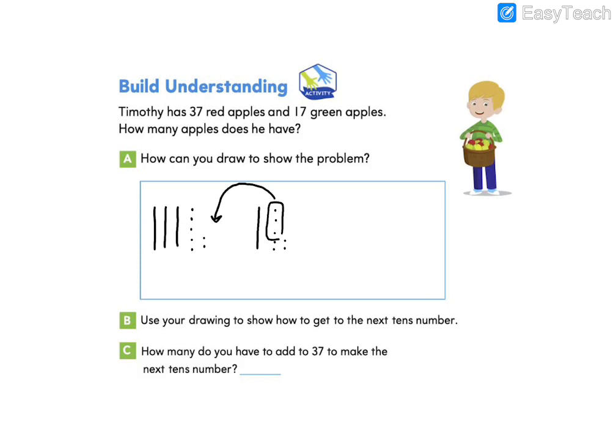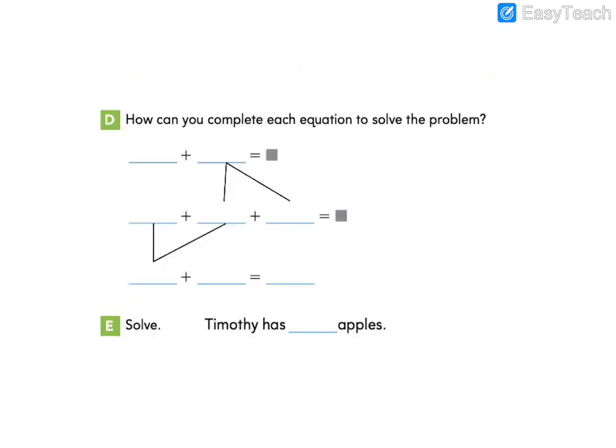So let's answer letter C. How many do we have to add to 37 to get to the next tens number? We need to add 3 ones.